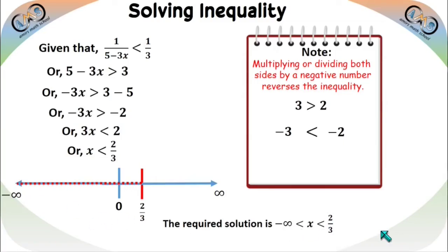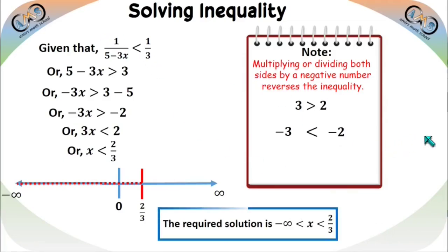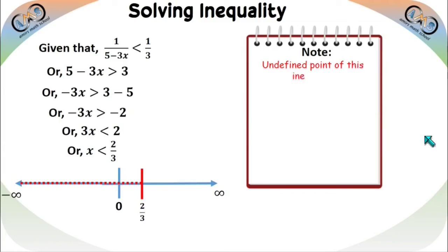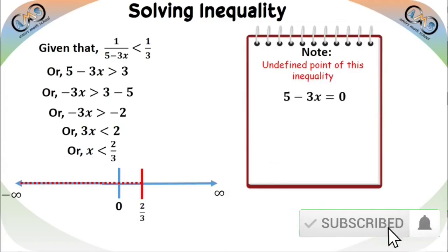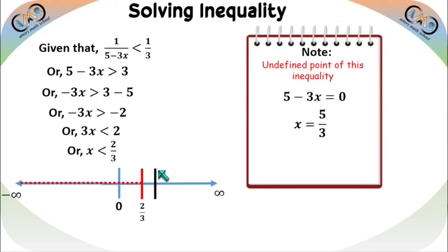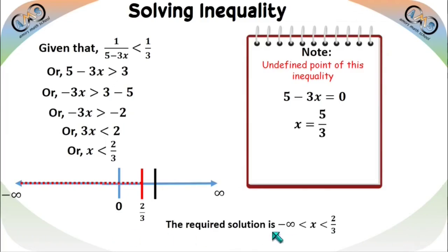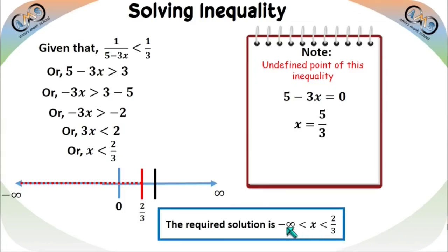We must check the undefined point for this inequality too. The undefined point is where 5−3x = 0, giving x = 5/3. Since 5/3 > 2/3, this point lies outside the solution (−∞, 2/3). There is no problem, so the required solution remains x ∈ (−∞, 2/3), i.e., x < 2/3, because the undefined point is outside the solution.